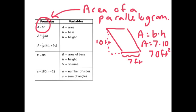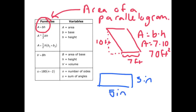The neat thing about this formula is that it also works for rectangles and squares, because rectangles and squares are also parallelograms. So if you have a rectangle of 3 inches by 5 inches, you could do length times width, or you can do base times height. The base is 5 times a height of 3, and your area equals 15 inches squared.